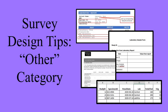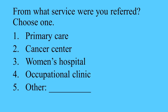Let's imagine you want to include an Other category in a list of choices for answers on an item on a survey. Here's an example item from a satisfaction survey for customers of a central lab: From what service were you referred? The choices are Primary Care, Cancer Center, Women's Hospital, Occupational Clinic, and Other. Let's say the survey respondent puts Other as the answer. Is that good enough for you to just know that it's Other, or do you want them to tell you what it actually is?